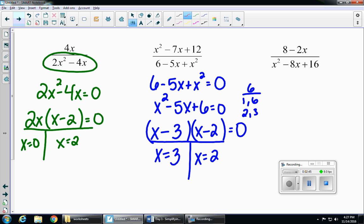Last one, 8 minus 2x over x squared minus 8x plus 16. Once again, undefined values. We're worried about our denominator only. And we set our denominator equal to 0.